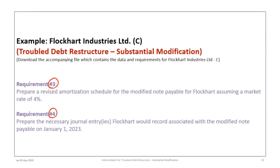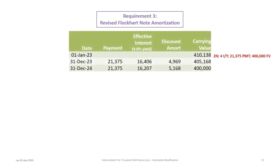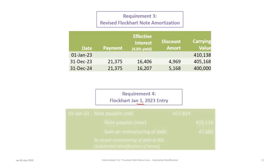Requirements three and four: prepare a revised amortization schedule for the note payable for Flockhart, assuming a given rate of 4%. In this case the problem provides the rate of 4%, so we use it. For the revised amortization, we calculate a new carrying value for Flockhart based on two payments remaining, a revised interest rate of 4%, a new payment of $21,375, and future value of $400,000, giving a new carrying value of $410,138. Completing the table with two payments at a 4% yield should arrive at $400,000.